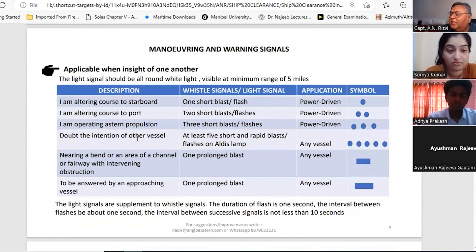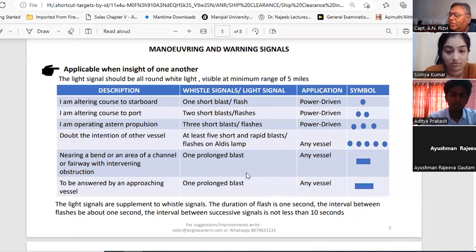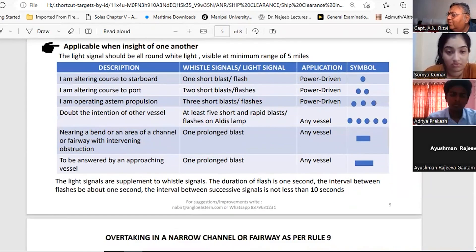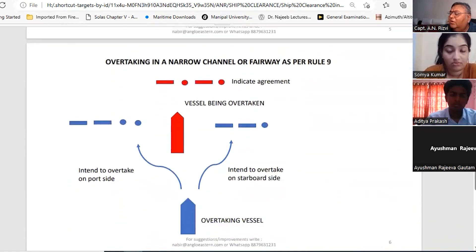Applicable signals - just now I had discussed one short blast, alter course to starboard. Two short blasts, alter course to port. Operating astern, three short blasts. And if you are having doubt, then at least five short and rapid blasts. And if you are nearing the bend, then one prolonged blast. And that has to be answered by another vessel by one prolonged blast. Then overtaking in narrow channel fairway - if you are overtaking from starboard side, two prolonged one short. If you are overtaking from port side, two prolonged and two short. And the vessel has to sound in agreement, like one prolonged, one short, one prolonged, one short - okay, you can overtake.